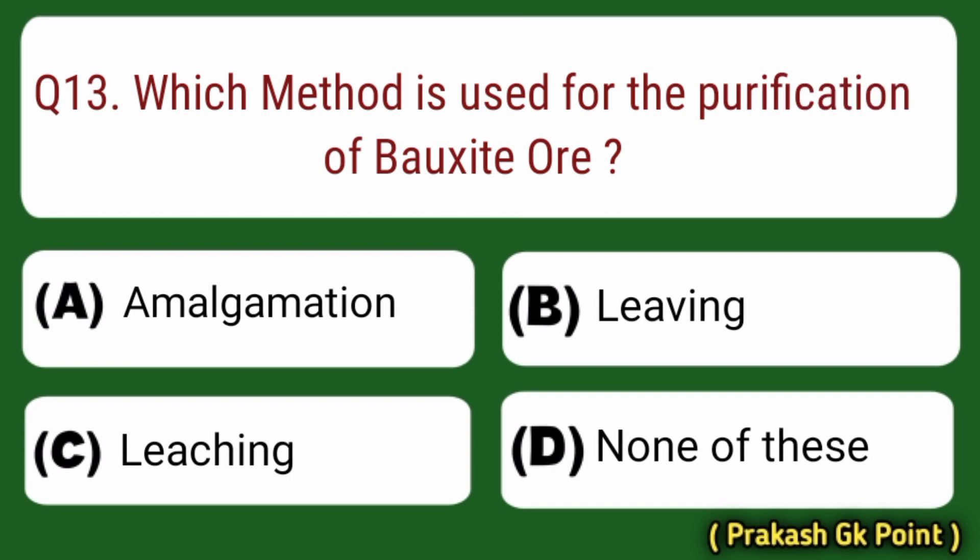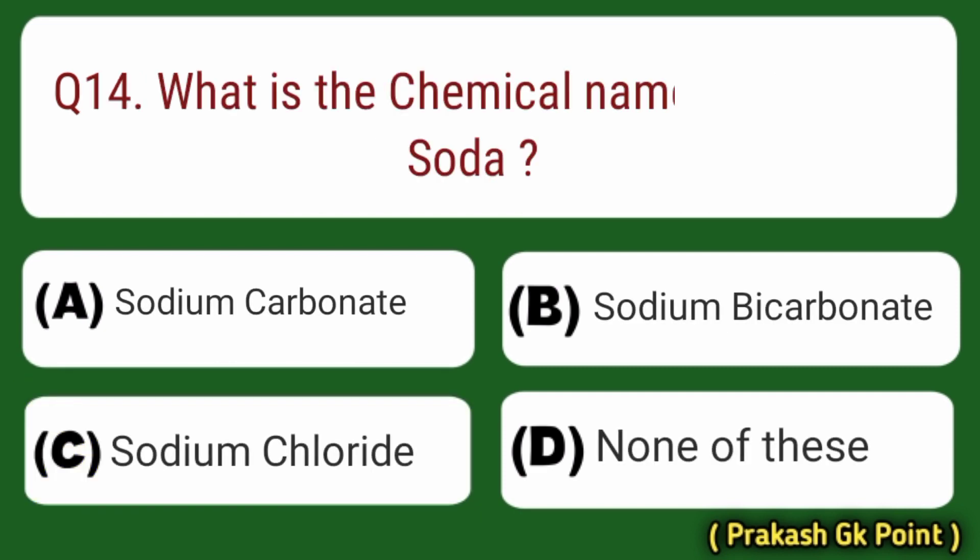Next question: which method is used for the purification of bauxite ore? Answer: Option C — Leaching.